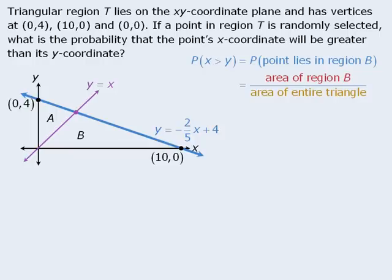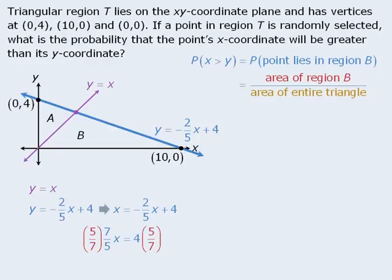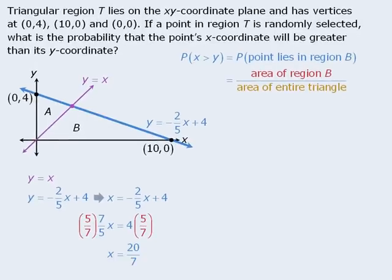At this point, we know that the point of intersection must satisfy the equation of the purple line and the equation of the blue line. We can solve this system of equations using substitution. Since the purple equation tells us that y equals x, we can take the blue equation and replace y with x. To solve for x, we will first add 2 fifths x to both sides and then multiply both sides by 5 sevenths to get x equals 20 over 7. Since y equals x, we now know that our point of intersection has coordinates x equals 20 over 7 and y equals 20 over 7.